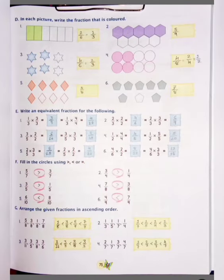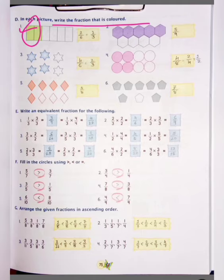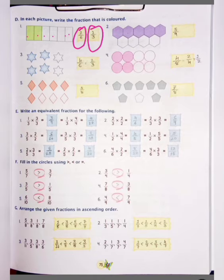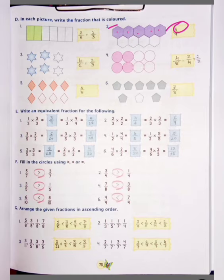Question D: In each picture, write the fraction that is colored. Here you can see the colored part is 2 and the total — counting 1, 2, 3, 4, 5 and 6 — so 2 upon 6 is equal to 1 upon 3. So fraction is 1 upon 3. Number 2: colored parts 1, 2, 3, 4 and 5 — so we write 5 — and total 5, 6, 7, 8 and 9 — so we write 9. Answer: 5 upon 9.